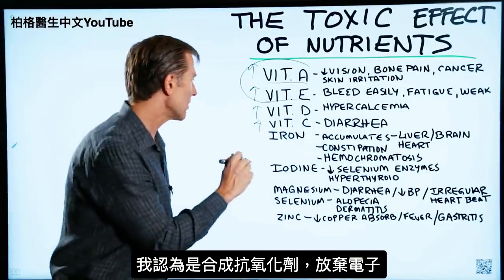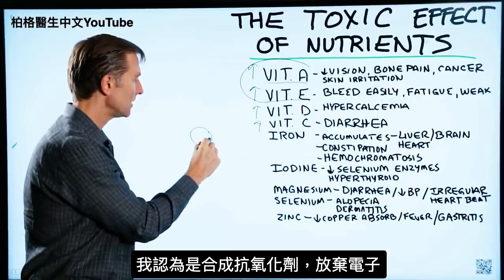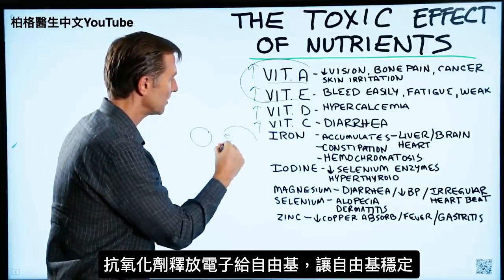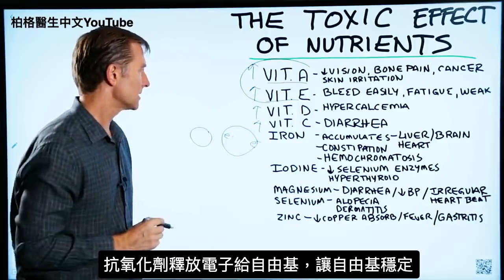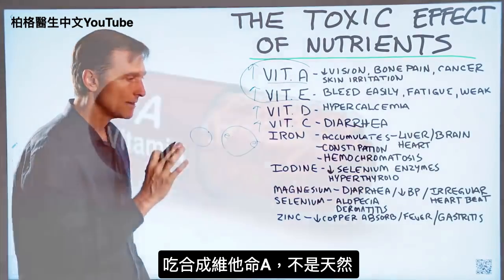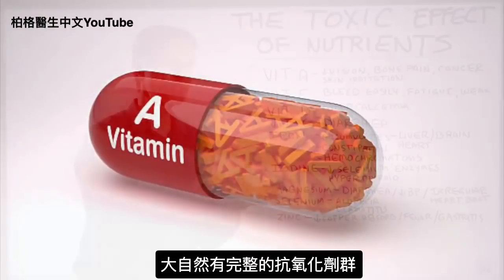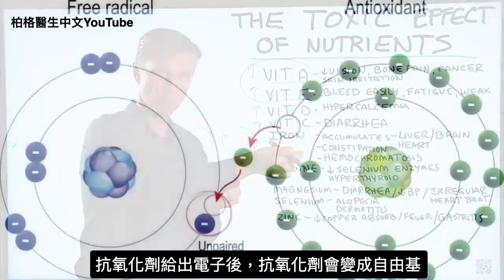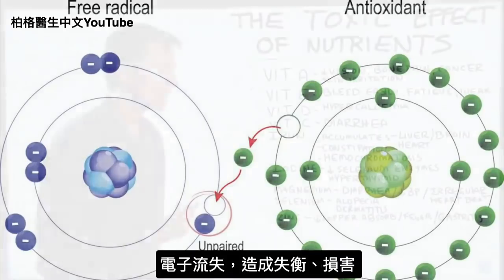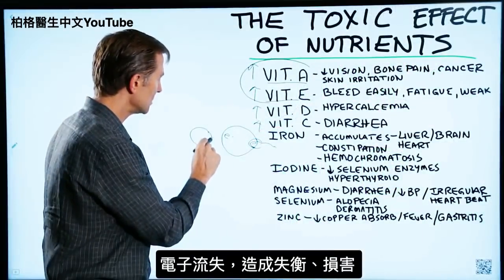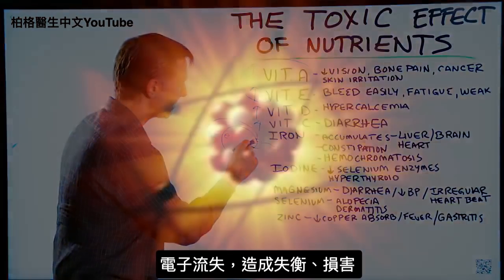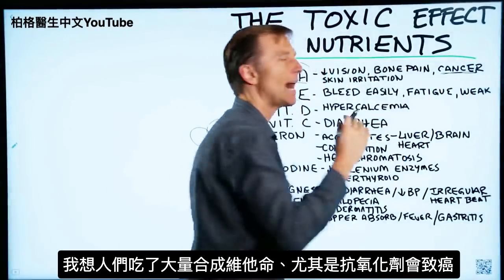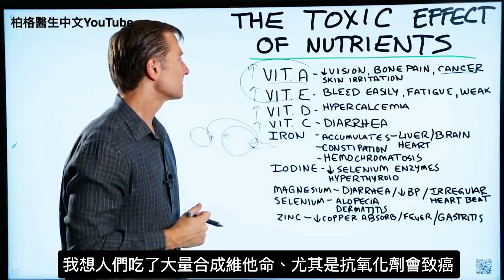Antioxidants basically give up electrons, helping stabilize free radicals by donating electrons so the free radical becomes stabilized. If you're taking a synthetic vitamin A, it doesn't come from nature. In nature, it always comes in a network of antioxidants. When one antioxidant donates an electron, it becomes a free radical itself because it lost that electron. If there's nothing else to donate and balance it out, it can create damage — and I think that's why people get cancer after taking high levels of synthetic vitamins, especially antioxidants.